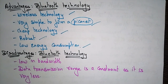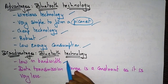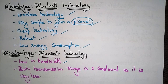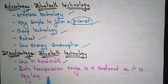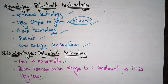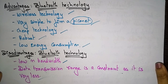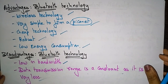The disadvantages of Bluetooth technology: it is low in bandwidth. The data transmission range is a constraint — in previous versions it is only 10 meters, and in version 5.0 only 40 to 400 meters. In the next video, I'll explain the architecture of Bluetooth technology.